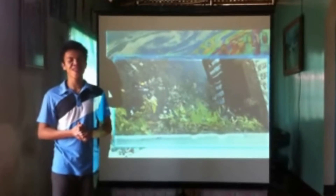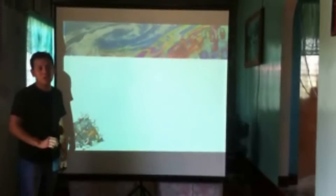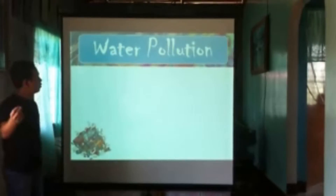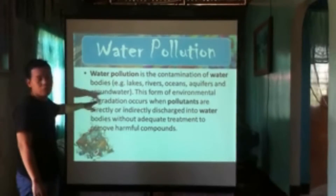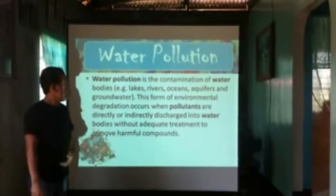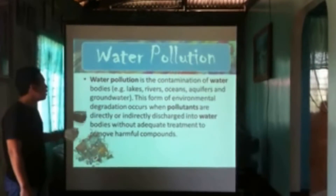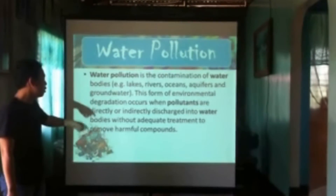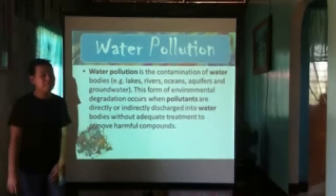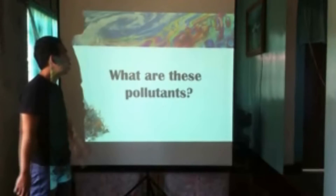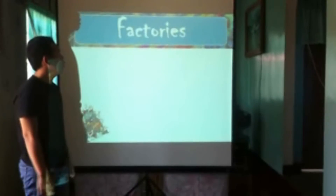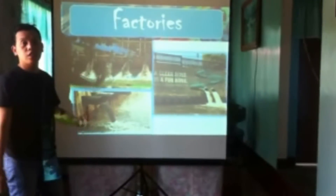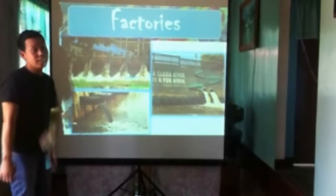To discuss the main topic, we call on Mr. Sonny Larito. Water pollution is the contamination of bodies of water — lakes, rivers, oceans, aquifers, and groundwater. This form of environmental degradation occurs when pollutants are directly or indirectly discharged into water bodies without adequate treatment to remove harmful compounds. What are these pollutants? Number one is improper disposal of waste from properties, which can cause water pollution and can cause death to living organisms in the water.